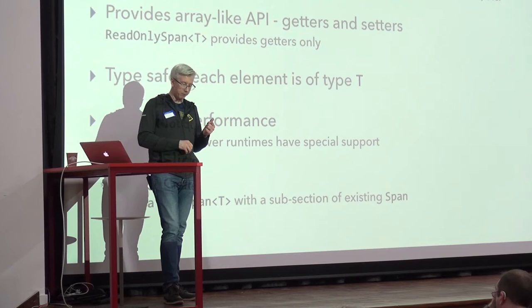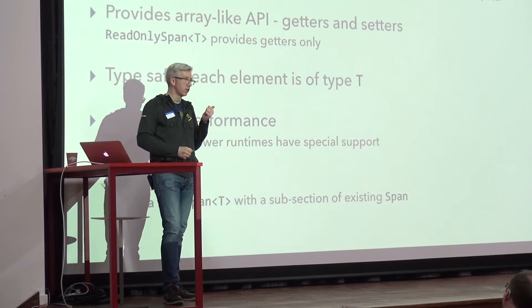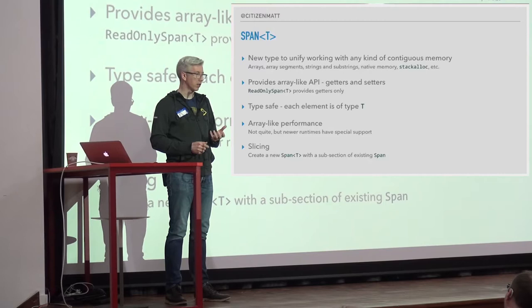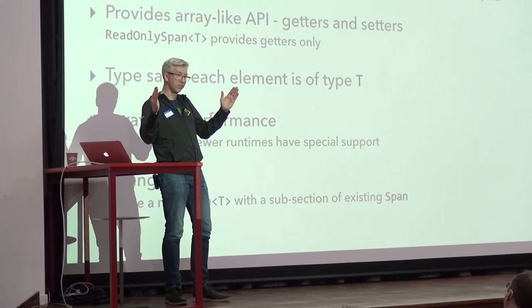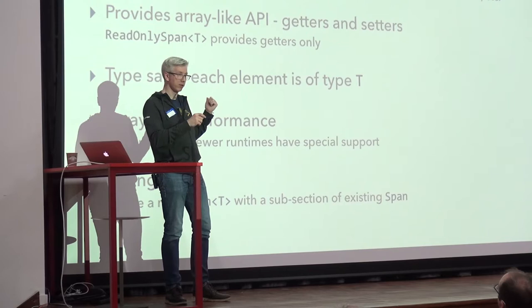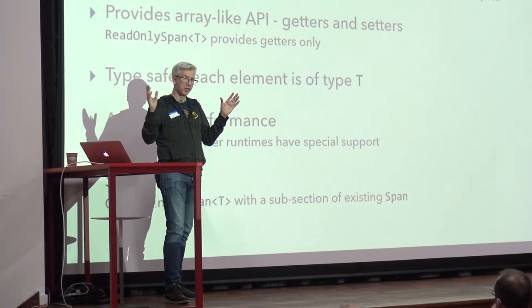The really big thing is that you can support slicing. You can have a span over a certain block of memory, then have another span which is a slice — a shorter chunk — but you haven't allocated anything because you've got a ref struct living on the stack. You're not copying that block of memory at all, just referencing it. It's a NuGet package: System.Memory, still in pre-release. It targets .NET Standard 1.1 and above — so .NET Framework 4.5+ and .NET Core 2.0 and above.